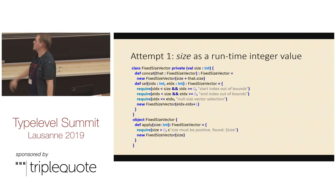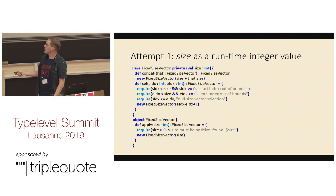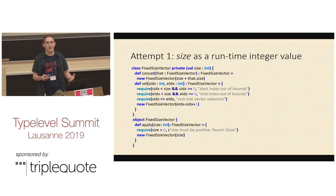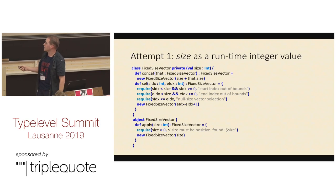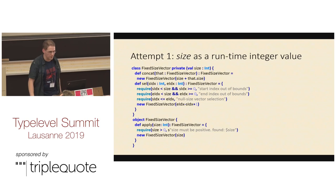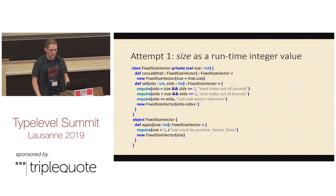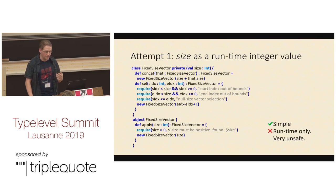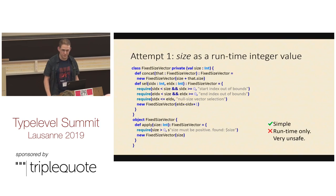We want everything to be constrained properly — the selection bounds to be checked, and when we create a fixed-size vector, we cannot create something with zero or fewer elements. So this is the first trivial attempt: we add require statements where required. But this is very simple and unsafe — we don't like that.